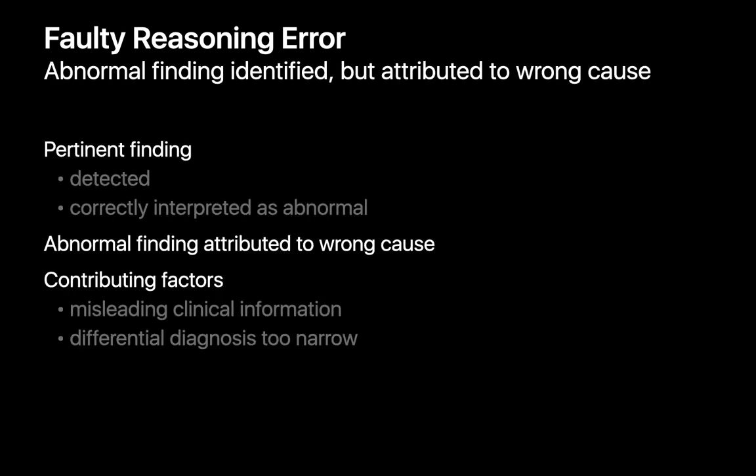With faulty reasoning errors, a radiologist sees a pertinent finding and identifies it as abnormal, but then goes on to attribute it to the wrong cause. Sometimes the reason is insufficient data, like when the clinical information provided for a case is misleading, or if the radiologist's own differential diagnoses are too narrow.